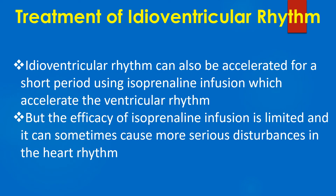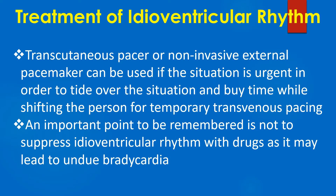Idioventricular rhythm can also be accelerated for a short period using isoproterenol infusion, which accelerates the ventricular rhythm. However, the efficacy of isoproterenol infusion is limited and it can sometimes cause more serious disturbances in heart rhythm. A transcutaneous pacer or non-invasive external pacemaker can be used if the situation is urgent, to tide over the situation and buy time while shifting the person for temporary transvenous pacing. An important point to remember is not to suppress idioventricular rhythm with drugs, as it may lead to undue bradycardia.